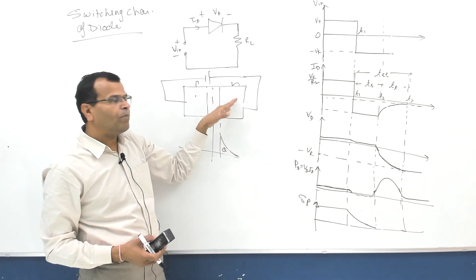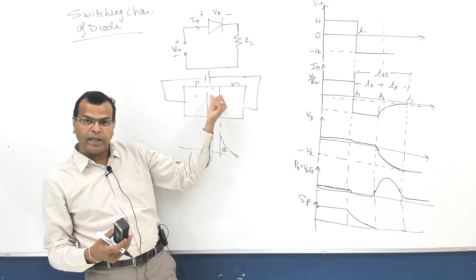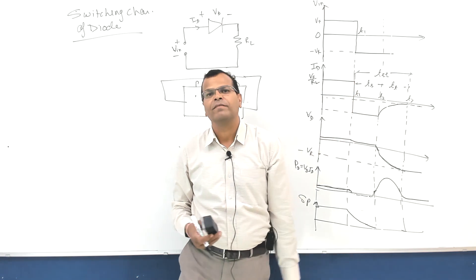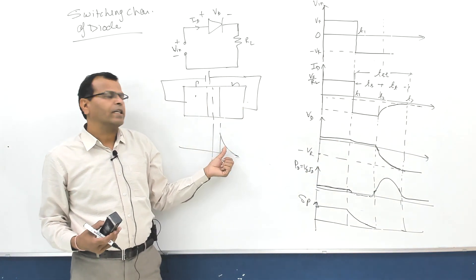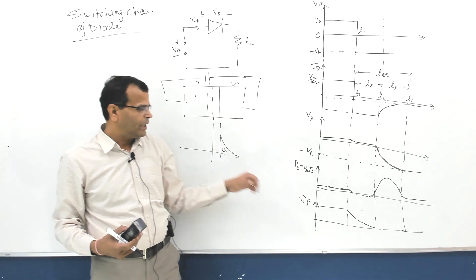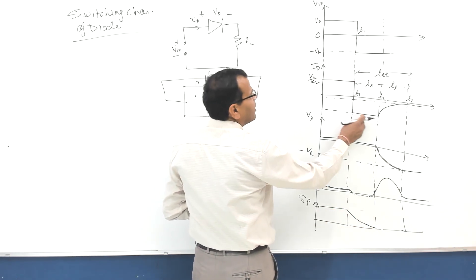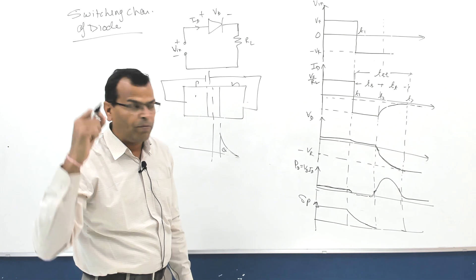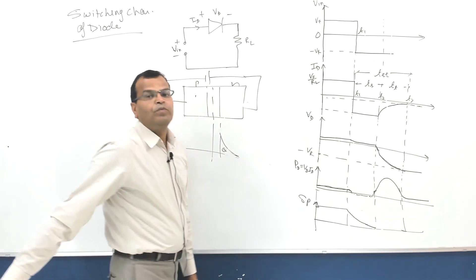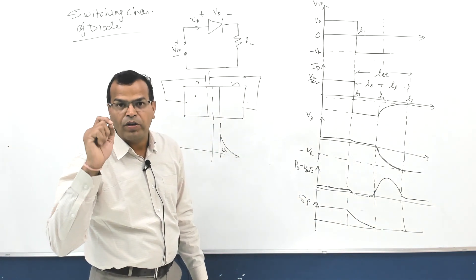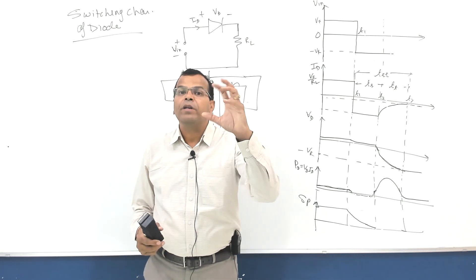Since there is flow of carriers from N side to P side, the diode current suddenly becomes negative. This reverse current remains constant until all the excess minority carriers move from N side to P side and their concentration reduces. During this duration we are removing the charge of excess minority carriers from N side to P side - in other words, we are discharging the diffusion capacitance.